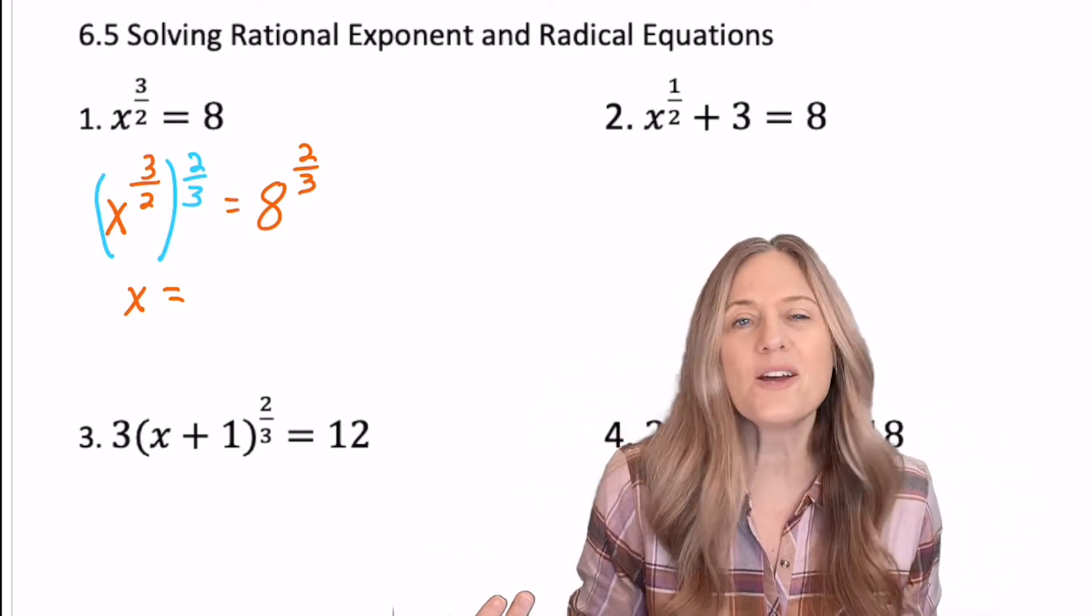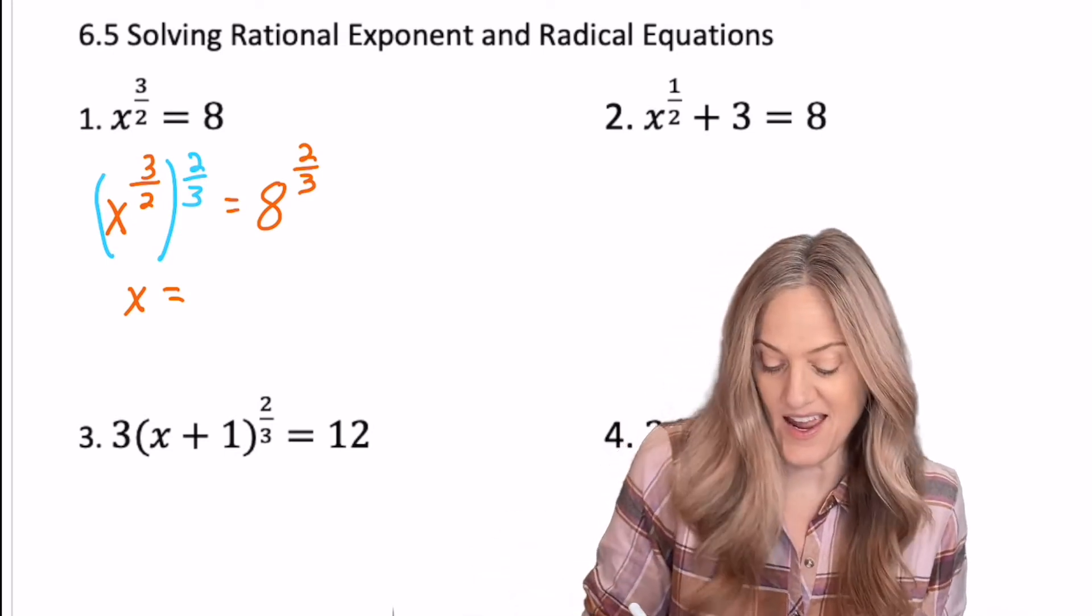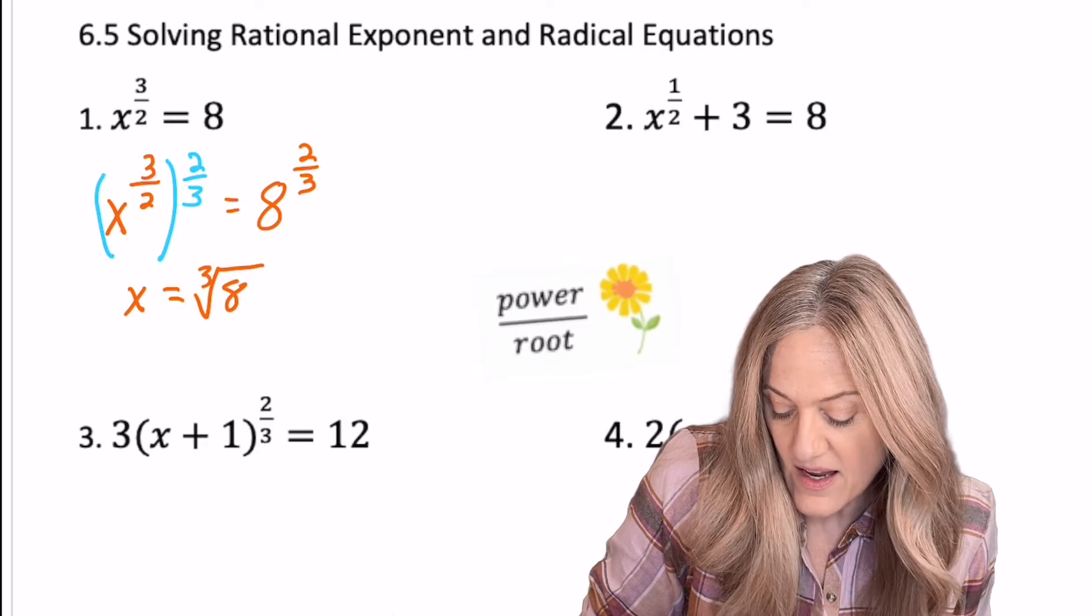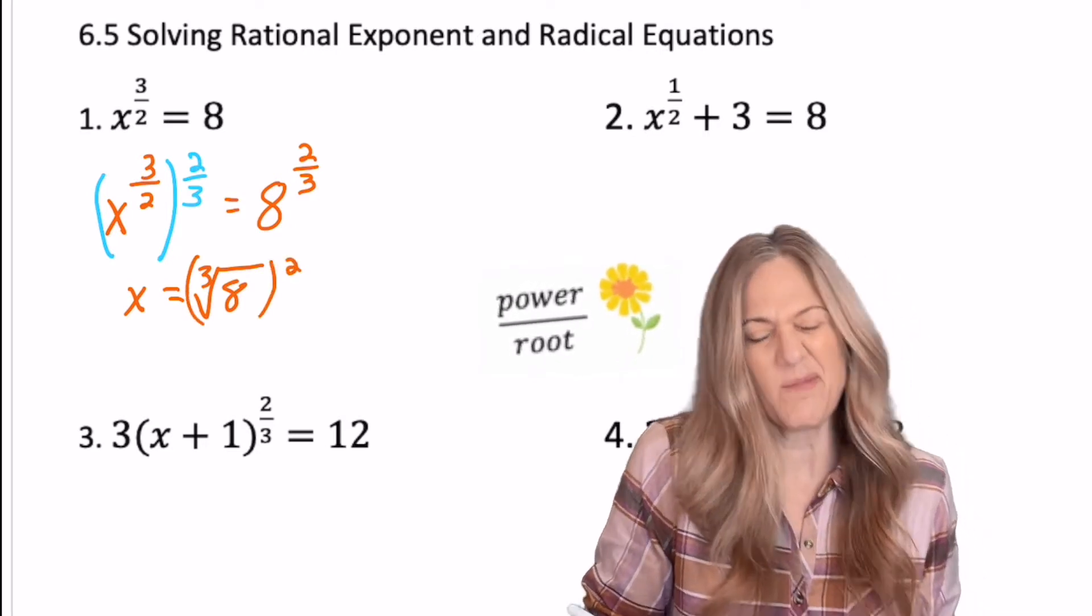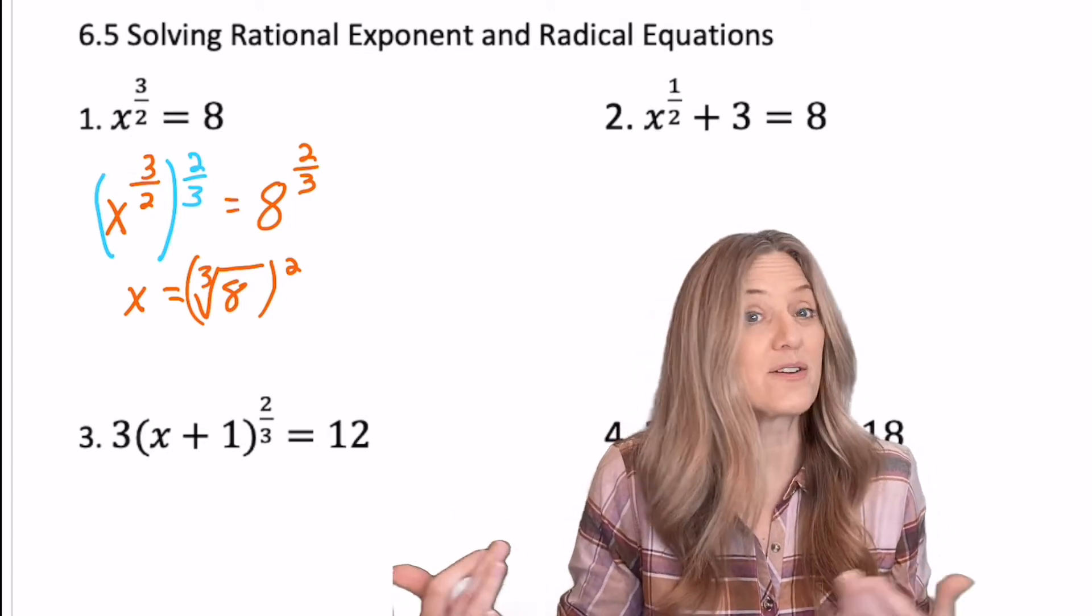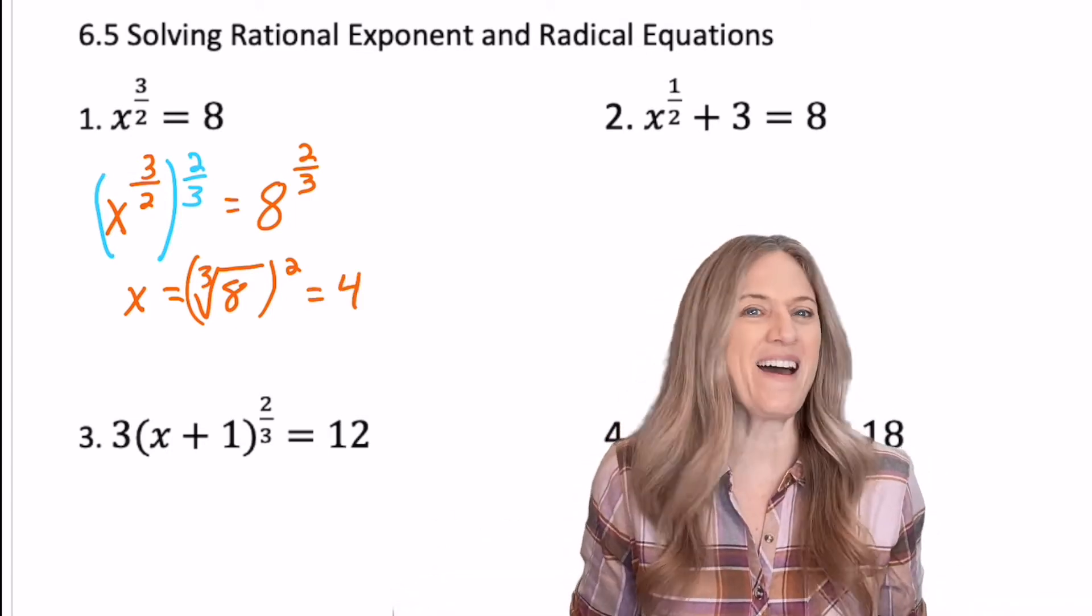Eight to the two thirds. We know it's easier to go radical in this case. So eight, cube root of eight, and then quantity squared. I'm going to go ahead and cube root first because that's easier. Cube root of eight is two and then two squared is four. Boom. That's not so bad, is it? How about you solve the next one?